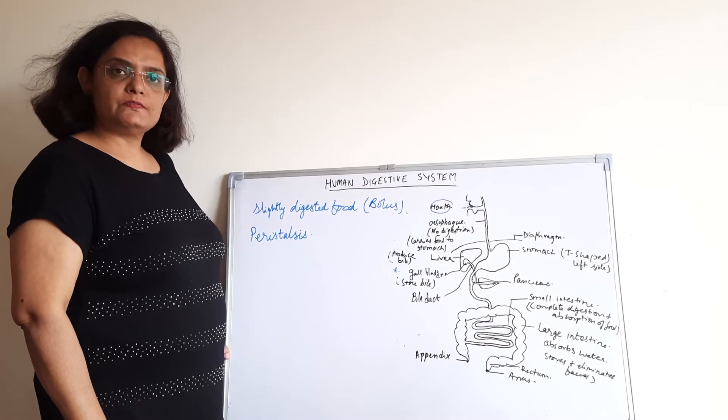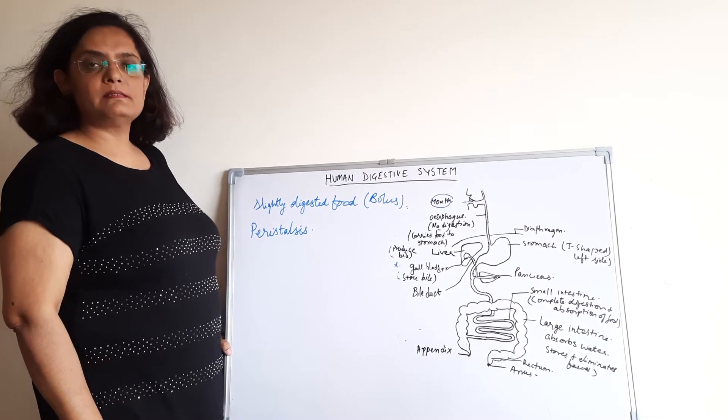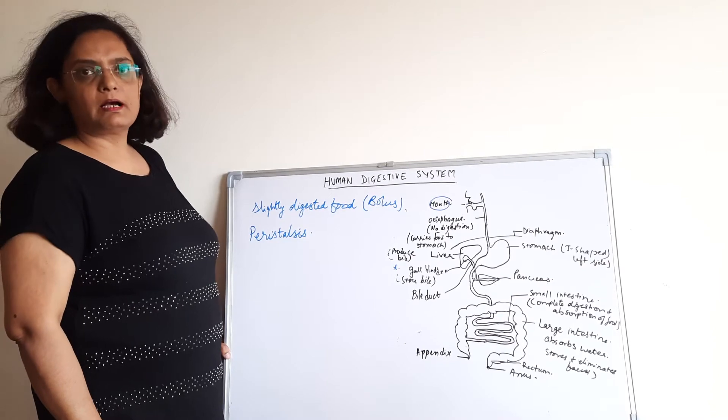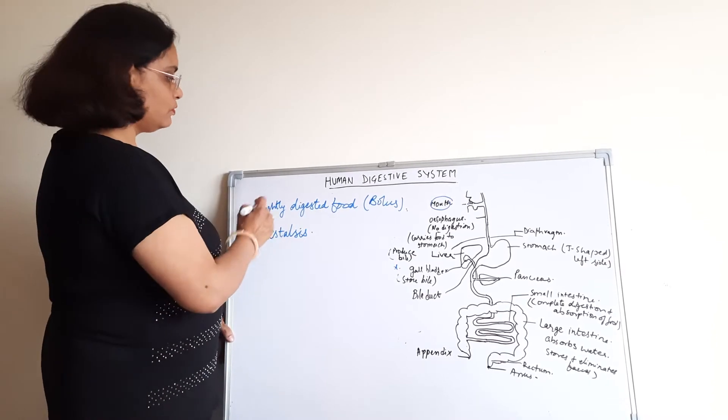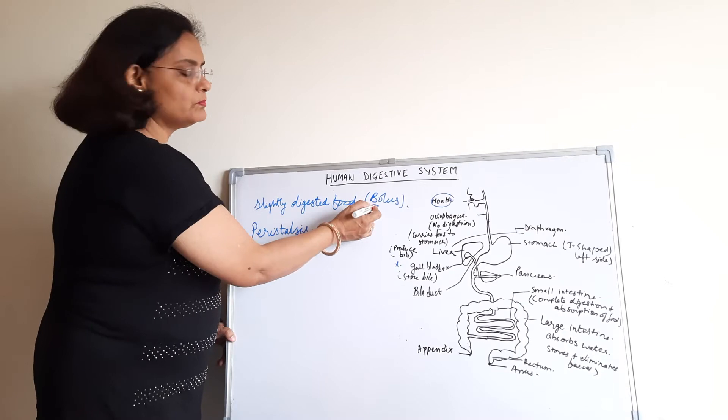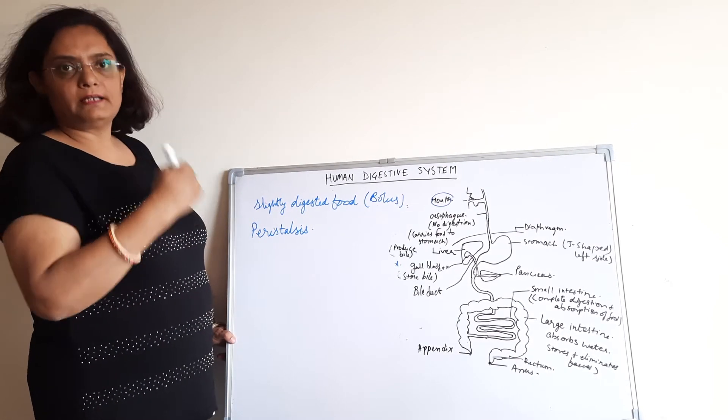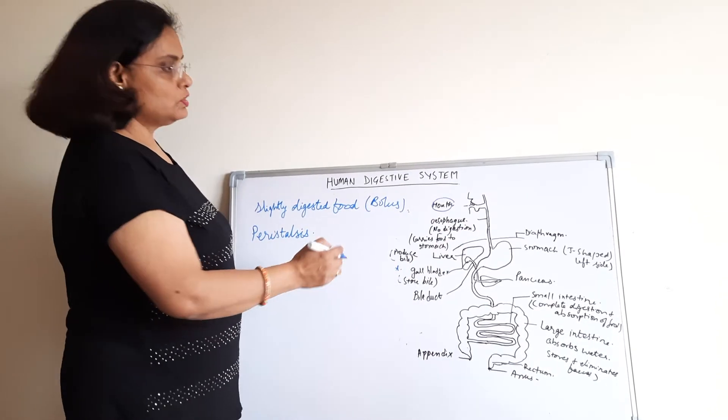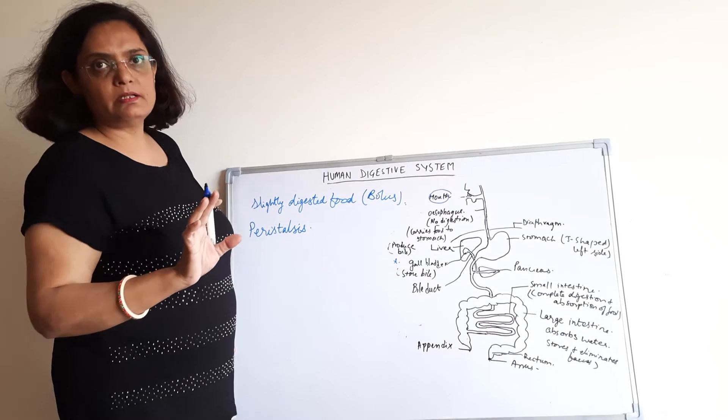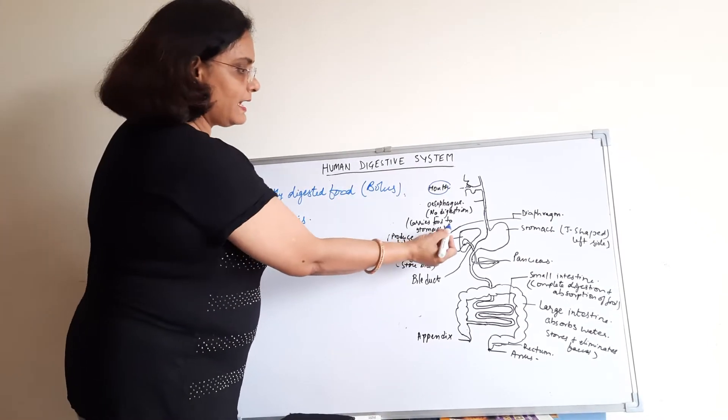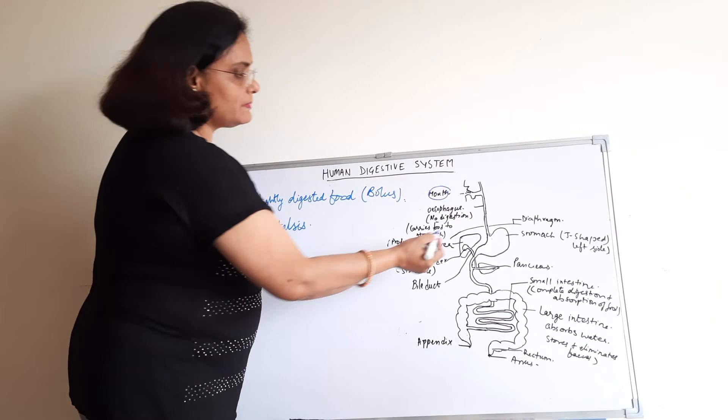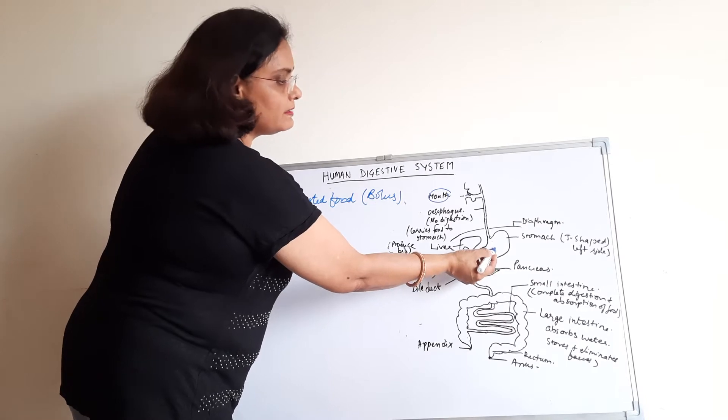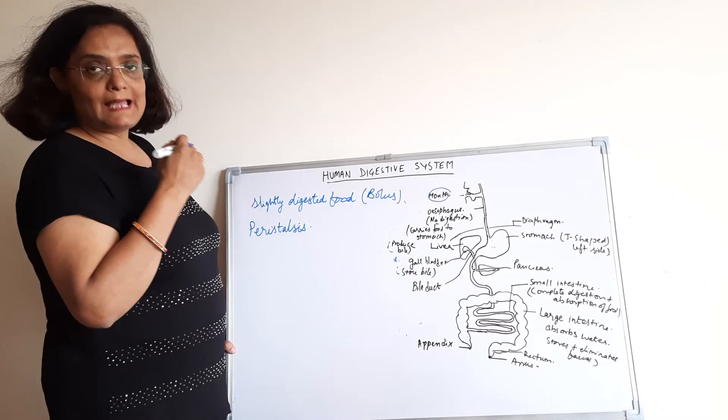So the digestion of carbohydrate starts in the mouth or the buccal cavity. Now the food, it is slightly digested and it is called bolus. And with the help of our tongue, it is pushed into the esophagus or the food pipe.